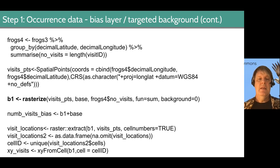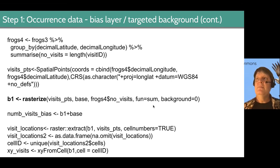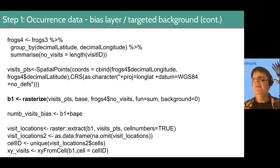We're going to take our visits points and create a raster with the same extent, CRS, and resolution as our base layer — summing the number of visits to each one of those locations, with the background set equal to zero. That gives us a sense of the survey effort in different grid cells within this region — how many different locations were surveyed within each grid cell. Each number in each grid cell corresponds roughly to the number of visits.